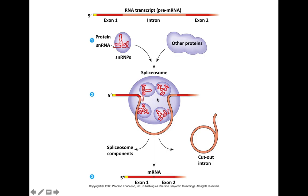The whole spliceosome, along with all the different proteins it is made up of, carries out the function of cutting this intron and removing it from the complex — but not just removing the intron; it also puts the two exons together. Exon 1 and exon 2 are now joined together and released. The spliceosome components are released, the intron is released, and the mature mRNA molecule is liberated from this complex. The coding sequences are now together and the introns have been removed.